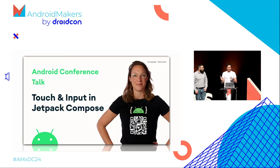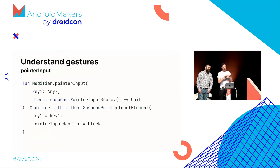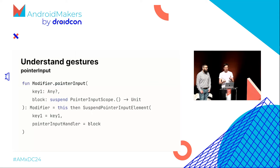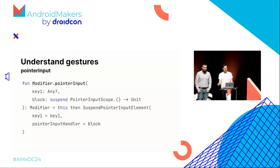We recommend watching a great talk about touch and input if you want to go deeper. But today, for creating our joystick, we just need two important functions. First, understand that a pointer is a physical object you use to interact with your application — in our case, for a joystick, it's a thumb. The pointer input modifier processes pointer inputs within the region of the modified element. We usually use it with awaitPointerEventScope to create a coroutine scope that waits for pointer inputs.